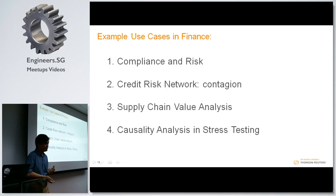We have a credit risk network and contagion. Then there's the supply chain. Foxconn is a supplier of Apple, but who's a supplier of Foxconn? You have an Apple iPhone with all its different parts coming from different companies, and you get a whole supply chain. You see that one leads to another — it's a complex network.